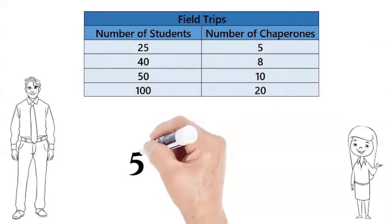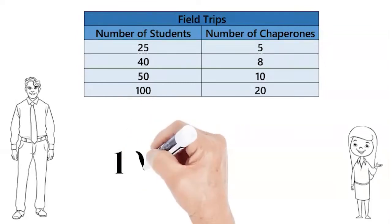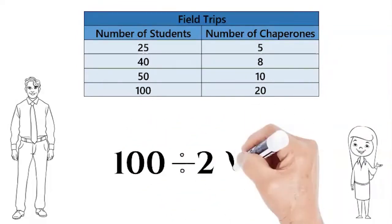On the next row, 50 divided by 10 is also 5. The rule is true here too. And on the last row, 100 divided by 20 equals 5, so again we have 5 students for every one chaperone. Great work!